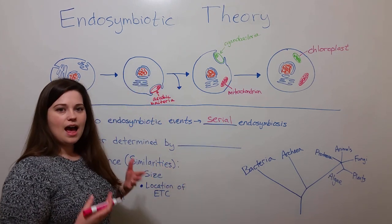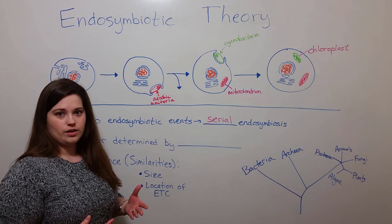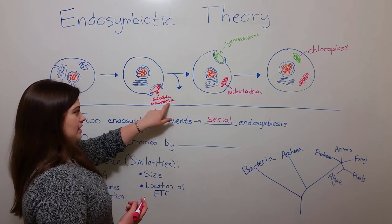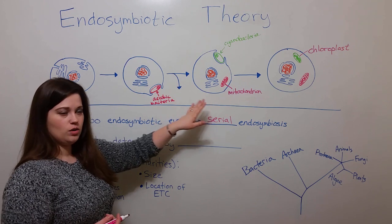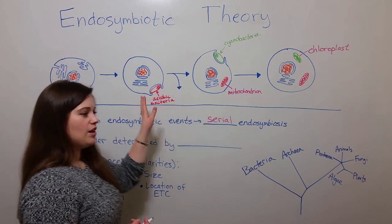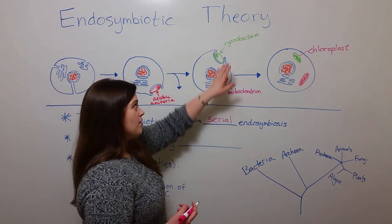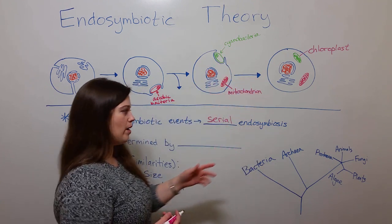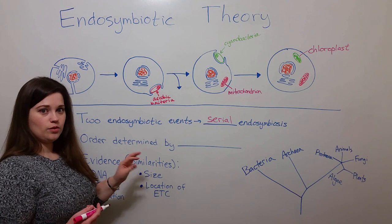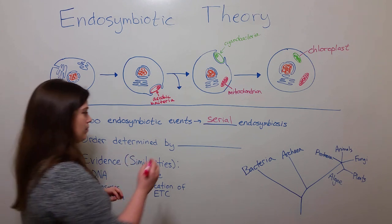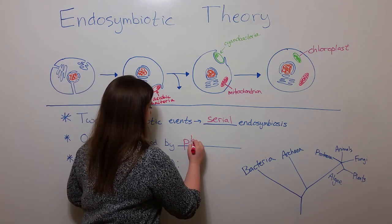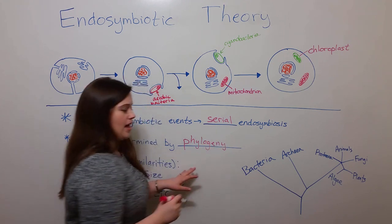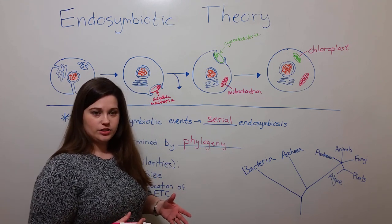Now, you might ask: how do scientists know the order that this happened in? How do we know that the aerobic bacterium leading to the mitochondrion was engulfed first, and that it was only much later that the cyanobacterium leading to the chloroplast was engulfed? Scientists know this from something called phylogeny — that is, the evolutionary history.